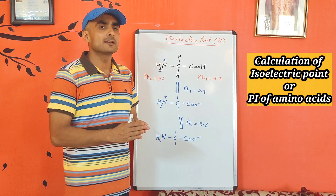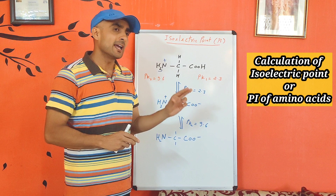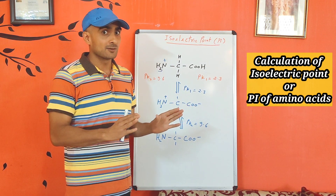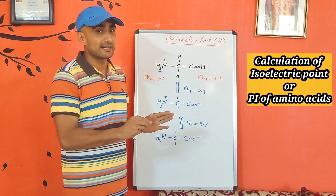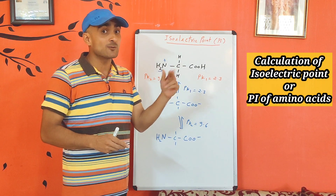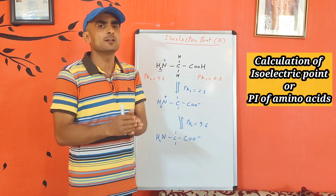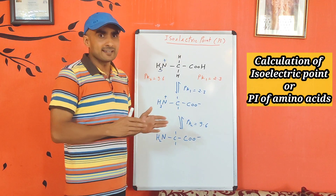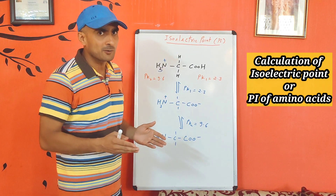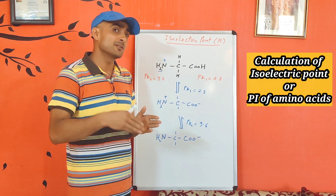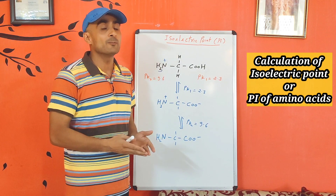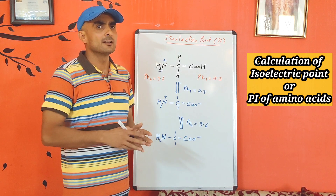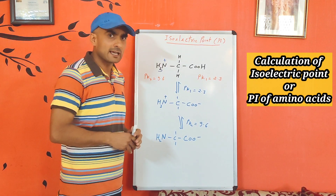Net charge zero means that at that pH value you will have the same number of positive and negative charge groups in that compound. That will give rise to zero net charge, and the pH value where it happens is called the PI of that compound. PI is an ionic property of any compound, which depends on the nature and number of ionic groups present in that compound. Let's take the smallest example — the simplest amino acid, glycine.